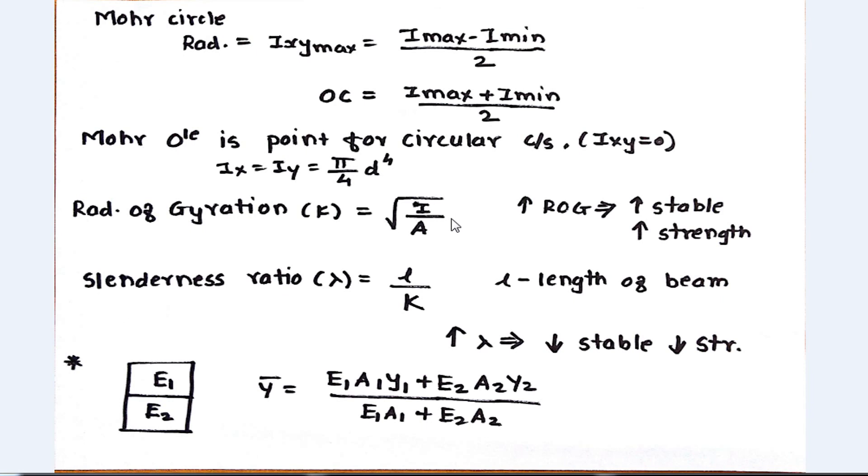K equals square root of I by A. Radius of gyration defines the stability of the member—that is, the maximum radial distance up to which the member can be stable. So the more the radius of the member, the more stable, which results in higher strength of the member.